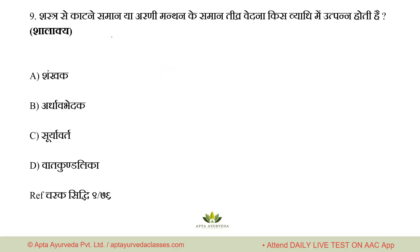Question number 9, from Shalakya Tantra: In which disease does Tivra Vedana (severe pain) like Shastra se katne samaan (cutting with a blade) or Arani Manthan (churning fire sticks) occur? Options: A. Shankhak, B. Ardhavbedak, C. Suryavart, D. Vat Kundali. Right answer is option B — Ardhavbedak. Reference: Charak Siddhisthana, Chapter 9, Shloka 76 — where lakshanas of Shankhak, Suryavart, and Ardhavbedak are all given. Note: Charak Siddhisthana Chapter 9 also has Mutraghat types — it must be studied thoroughly.